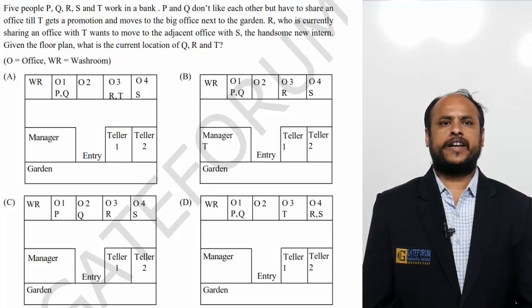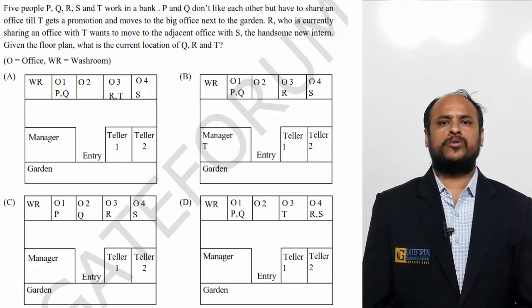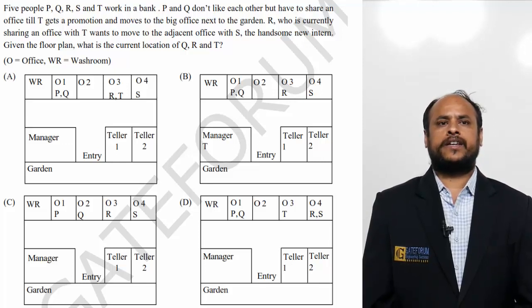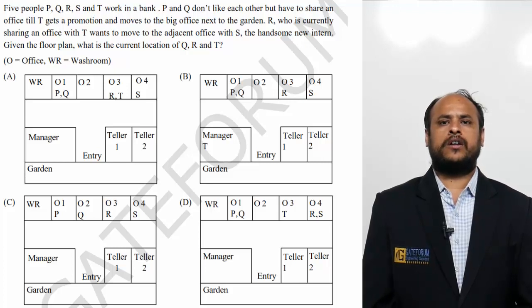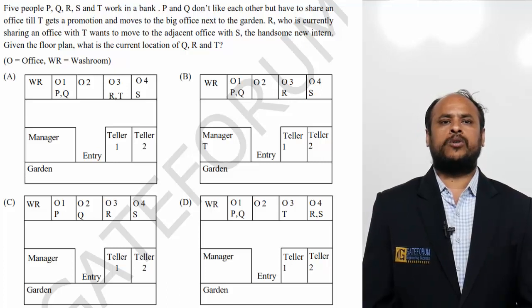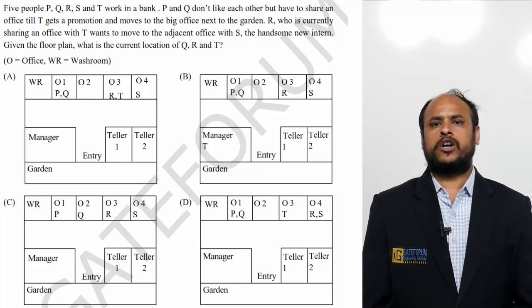R, who is currently sharing an office with T, wants to move to the adjacent office with S, the handsome new intern. Given the floor plan, what is the current location of Q, R and T? In brackets, it is given O equals office, W, R equals washroom. Here, 4 options are given.